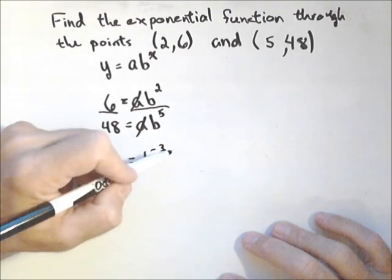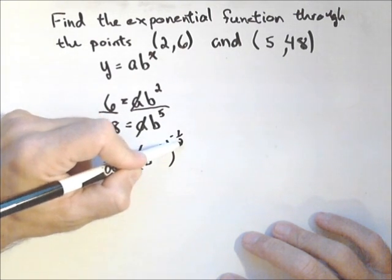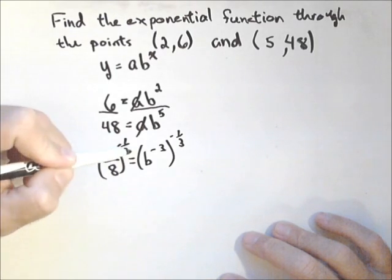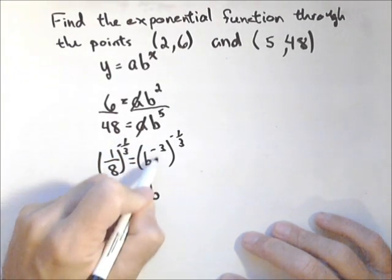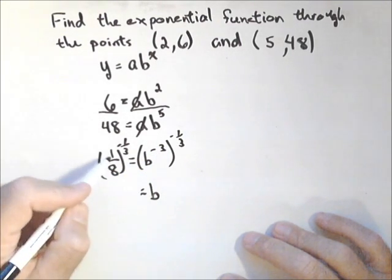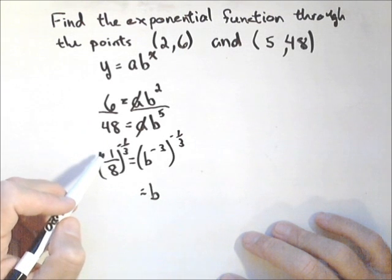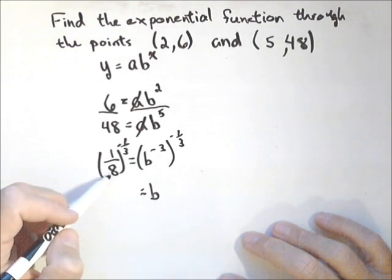Now, what we would do to solve this is we can raise both sides to the negative 1 third. We're going to raise both sides to the negative 1 third, because over here what that does is that makes that just b, because negative 3 times 1 third is 1. Over here, this is what we can do by hand, but if we had something more difficult, we could either leave our b this way, or we could calculate it with a calculator.